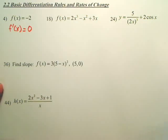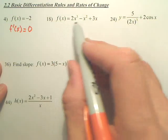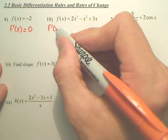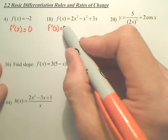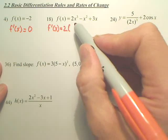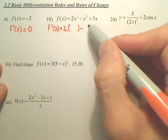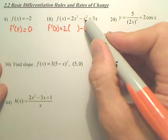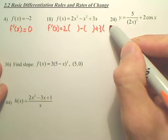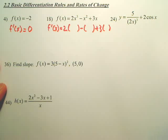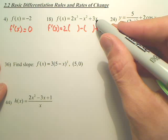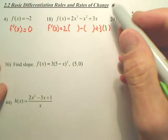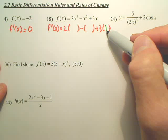For the next function, we write f prime of x. There's a simple rule: you take the coefficient and leave it out front, then derive the variable. Looking at x, the slope of the line y = x is always 1, so the derivative of x is 1.